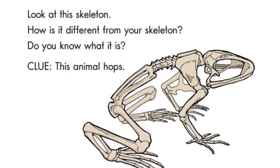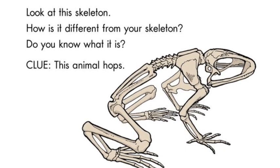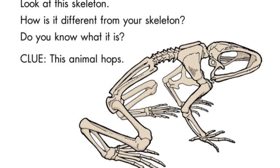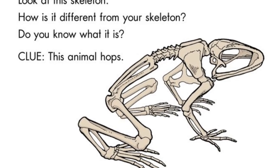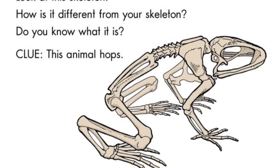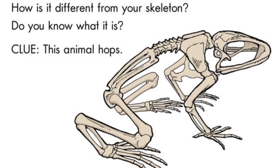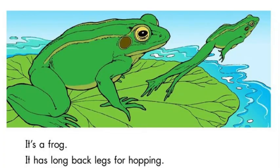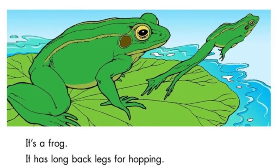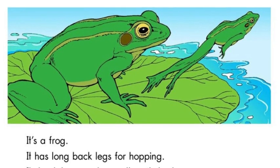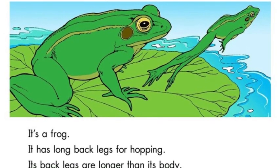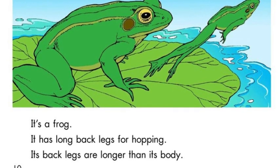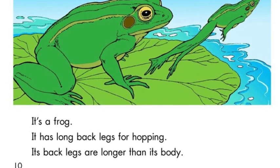Look at this skeleton. How is it different from your skeleton? Do you know what it is? Clue: this animal hops. It is a frog. It has long back legs for hopping. Its back legs are longer than its body.